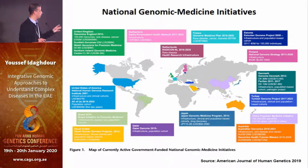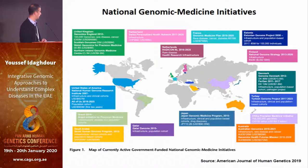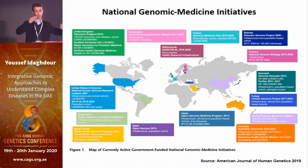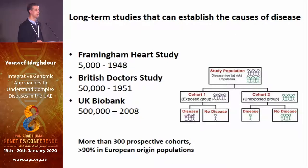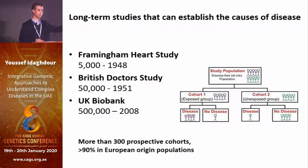Currently, there are two main cohort studies in the region. The design idea is really that if you sample populations and follow them over time, that gives you a lot of power for genetic analysis. The most powerful design is what we call prospective cohort studies — you sample populations and then follow them over time.